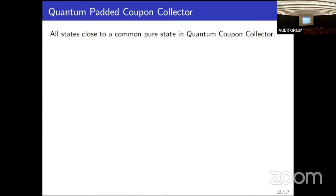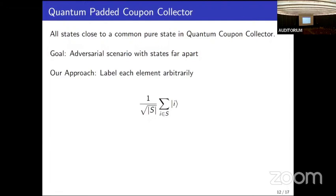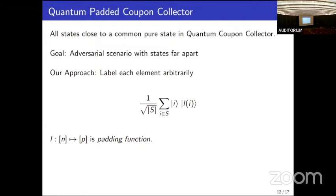We wanted a problem that gives us the proper learning lower bound but does not exhibit the quantum speedup that appears in the quantum coupon collector problem. The key reason for the quantum speedup is that all possible quantum samples are close to one common pure state. To get around this, we want an adversarial scenario where some states can be far apart. We do this by labeling each element arbitrarily, appending a ket l_i for each ket i, where l is a padding function from the set of n natural numbers to itself.